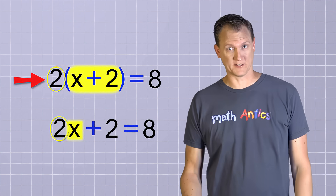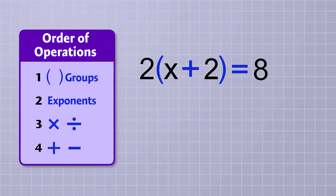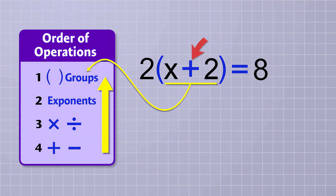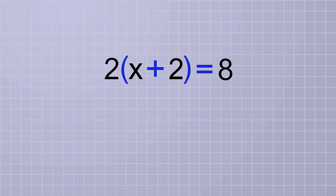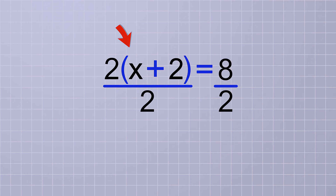That's going to change how we solve it. We're still going to follow our order of operations rules in reverse, but now that x plus 2 is inside parentheses — part of a group — we're going to undo that operation last. Since we do operations inside groups first, we undo operations in groups last. So in this problem, we should start by undoing the multiplication implied between the 2 and the group x plus 2. To do that, we divide both sides of the equation by 2. On the first side, the 2's cancel, leaving the group x plus 2 on that side.